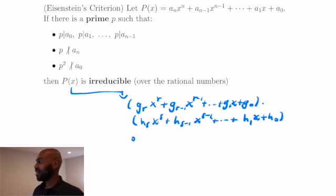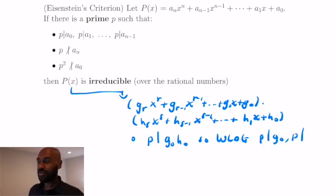So let's expand this product and analyze to see what we can conclude. First of all, let's take a look at the constant term. So the constant term in the expansion is g_0*h_0, so we're given that this prime p divides that constant term a_0. So p divides g_0*h_0, but at the same time, p squared does not divide g_0*h_0, and p is a prime. So p is going to divide one of these and not the other. We'll assume, without loss of generality, that p divides g_0 and does not divide h_0.